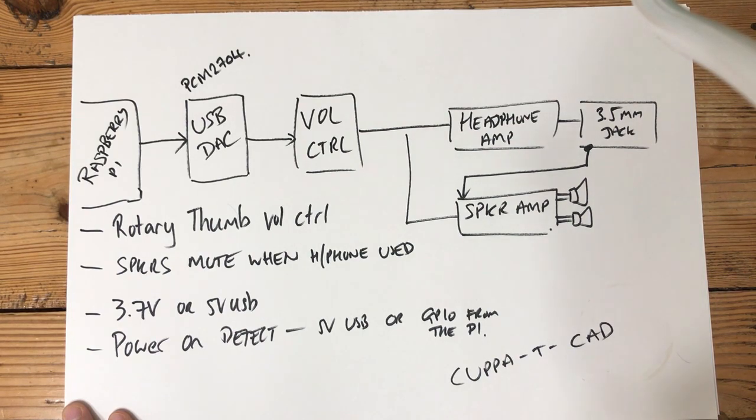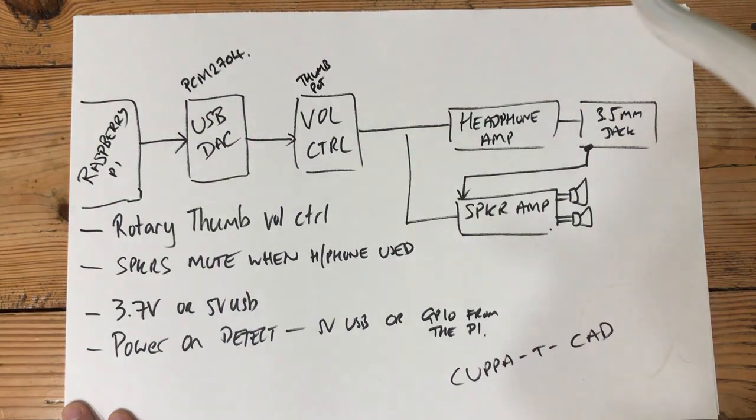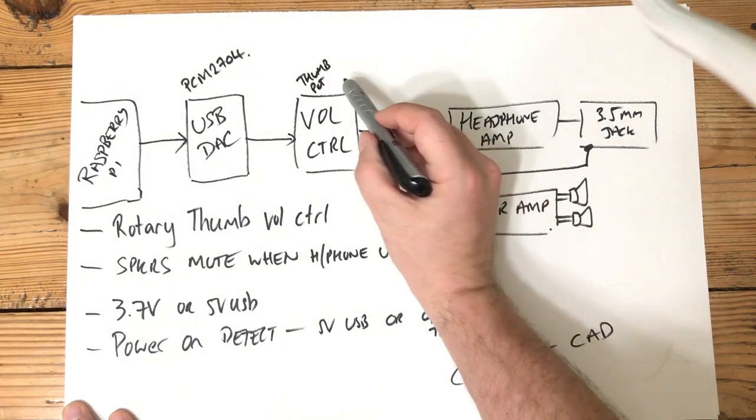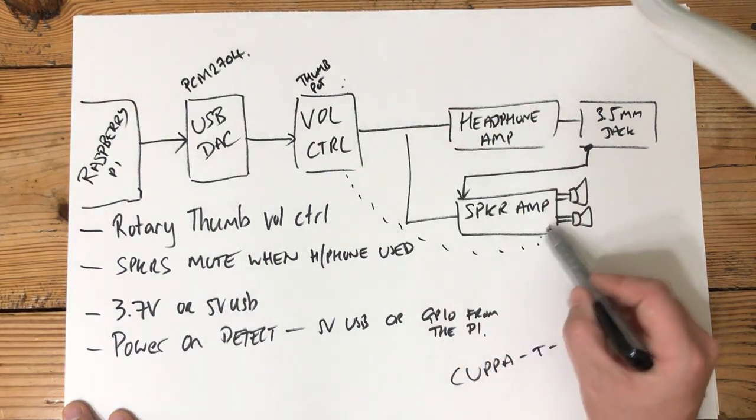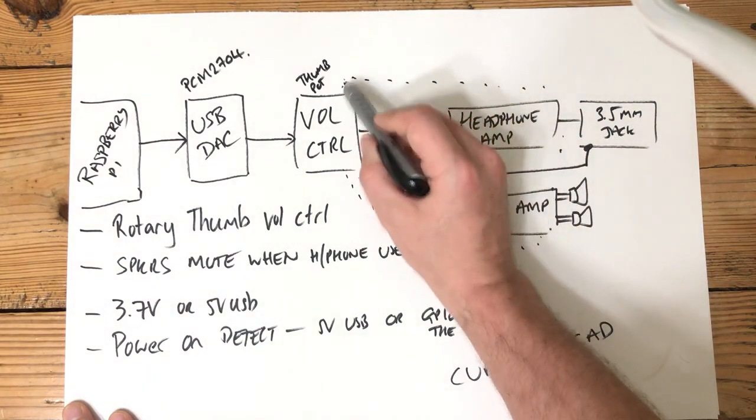The volume control, I'd like to use the little thumb pot. Now, I've got some in stock that are stereo ones. However, here's the magic bit. I think I have found a device that integrates the speaker amp, the headphone amp, and a volume control.